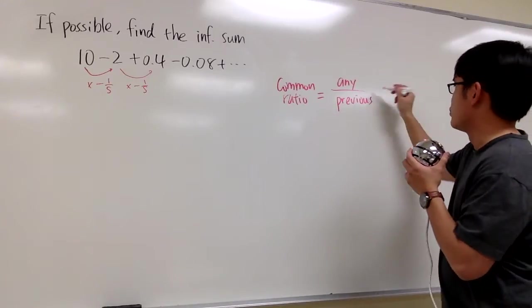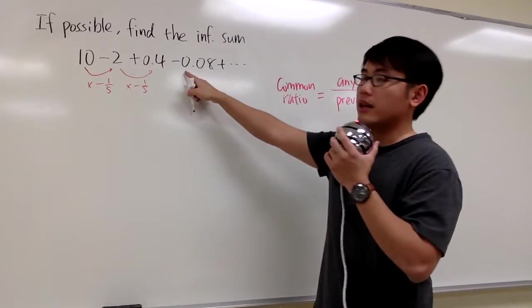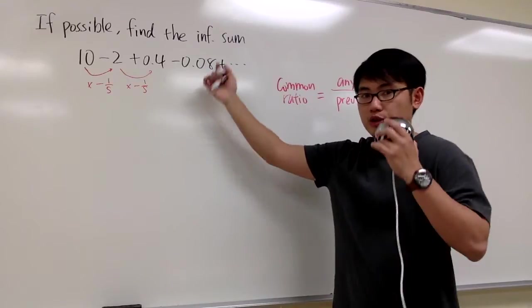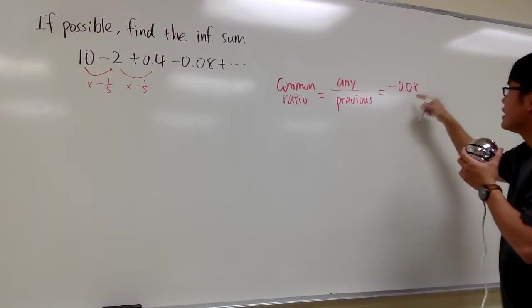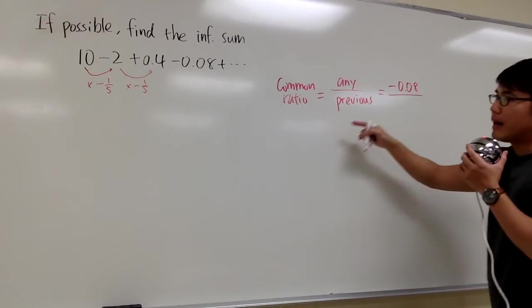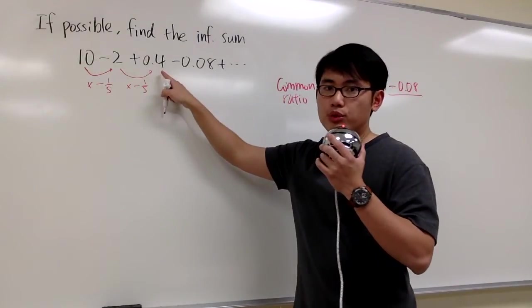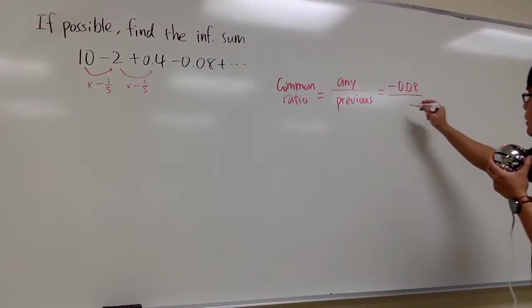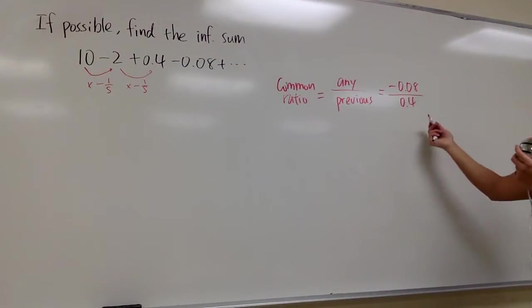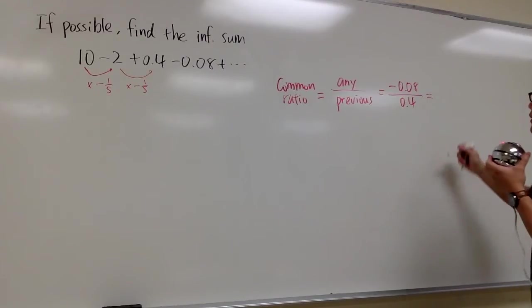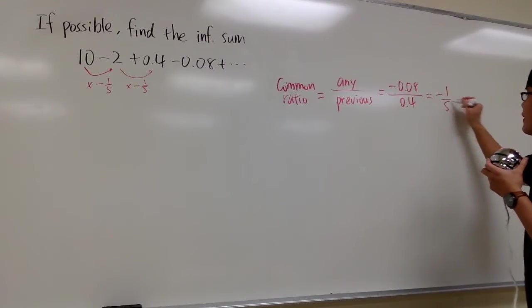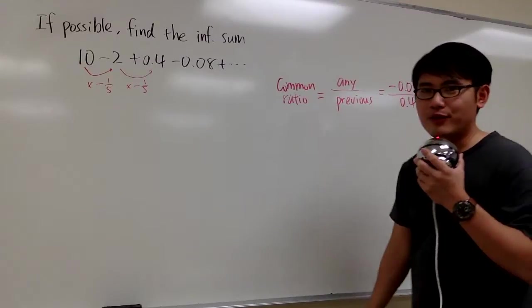Let's do it real quick. For example, I want to pick negative 0.08, just one of the terms to show you. I pick negative 0.08 and divide it by the previous term, which is positive 0.4. After you work this out, you can use fraction or decimal, whatsoever. You will end up with negative 1 over 5, and I'll leave the computation for you.